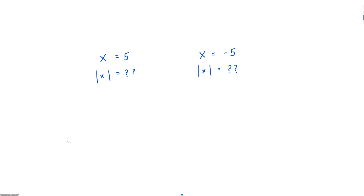On the left side, if I were to tell you that x is equal to five and then ask what is the absolute value of x, the absolute value of x is just the absolute value of five. So in this case, the absolute value of x is also equal to five. In other words, the absolute value of x in this case is just equal to x.